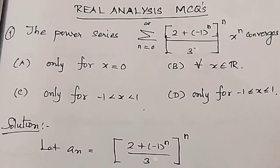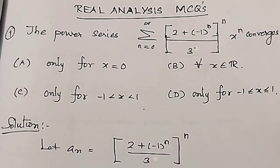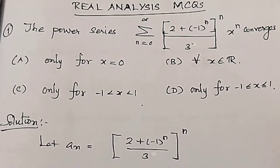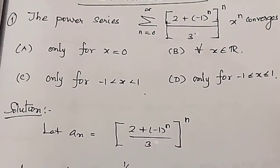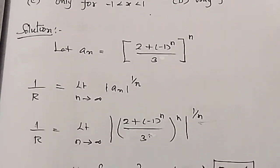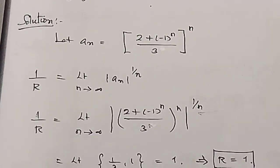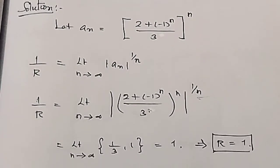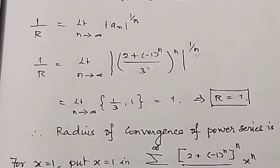The first problem is the power series. Let a_n equal to (2 plus minus 1 power n) divided by 3, whole power n. So, 1 by r limit. The limit is 1 by 3.